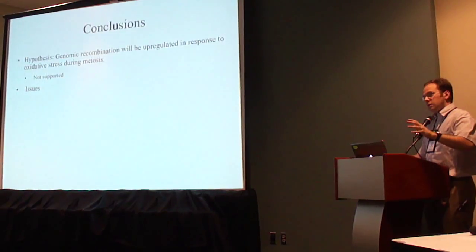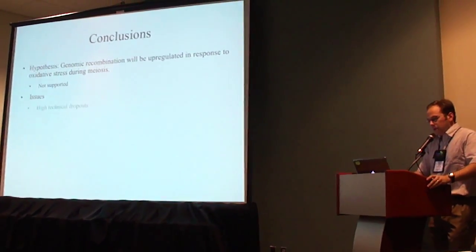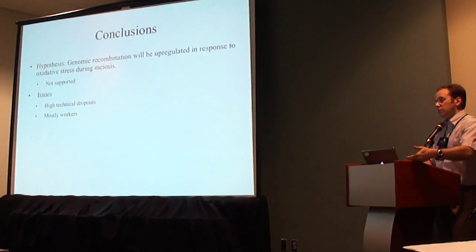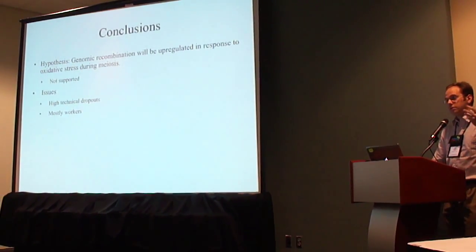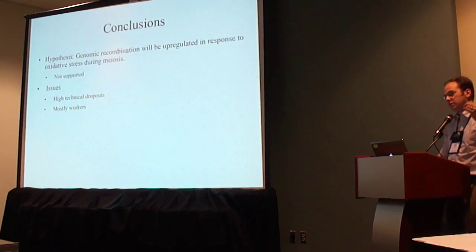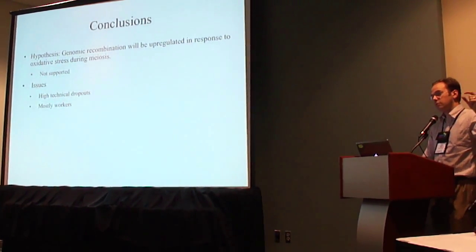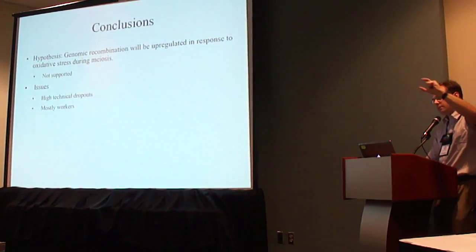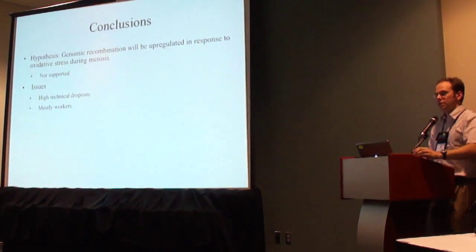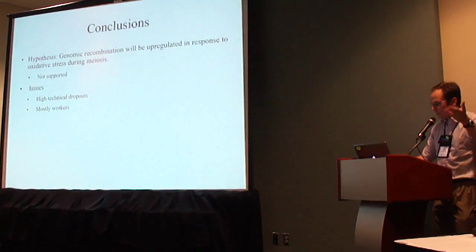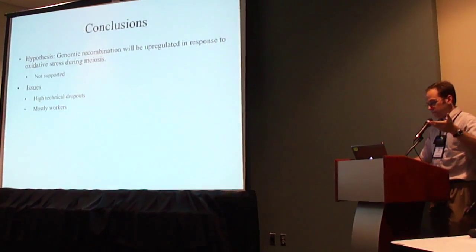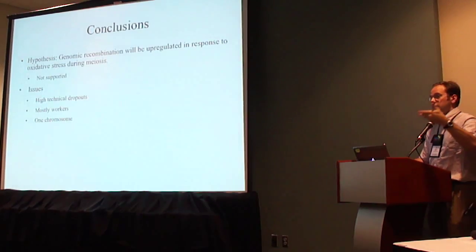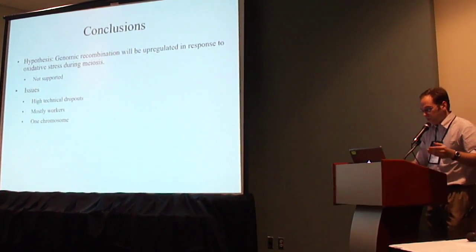There are a few issues that complicate the data. There were high technical dropouts, partly because most of the brood collected were workers having two parents — sometimes the drone fathers had an allele identical to one of the queen alleles, making those individuals appear to have both queen alleles, and they had to be called as technical dropouts, reducing statistical power. Additionally, I only tested chromosome 3; testing more chromosomes might reveal a broader genome-wide trend.